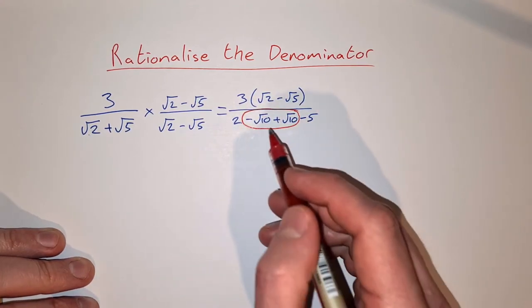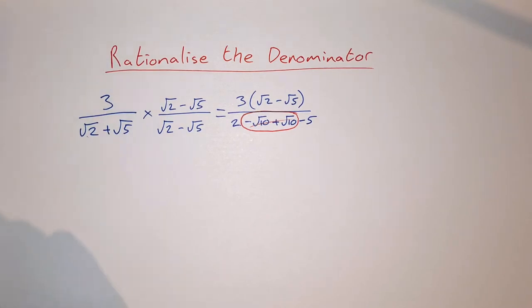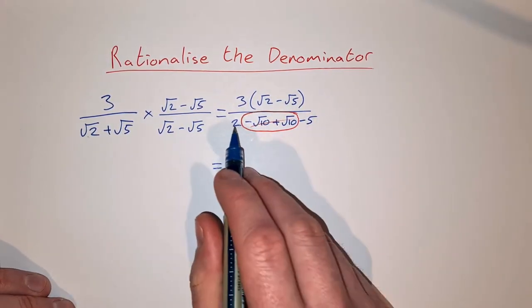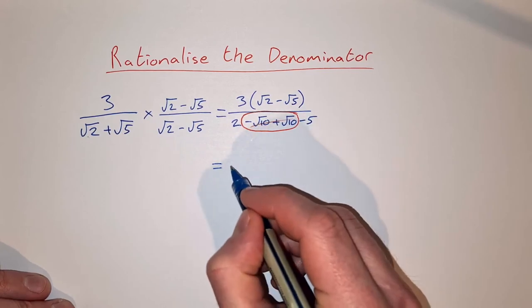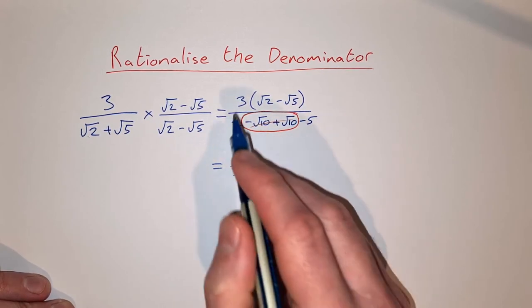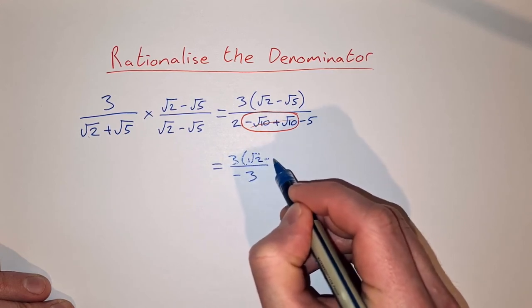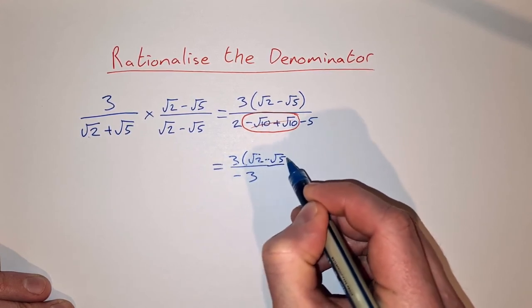So we have minus root 10 plus root 10 is 0, so they're gone. So on the denominator on the bottom we now have 2 minus 5 which is minus 3, and on the top we have 3 times root 2 minus root 5.